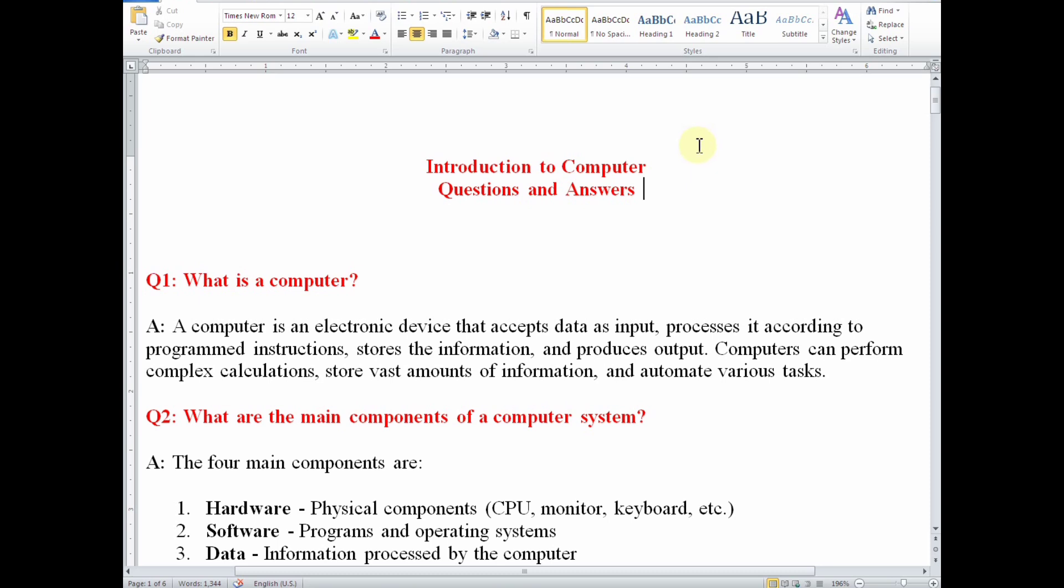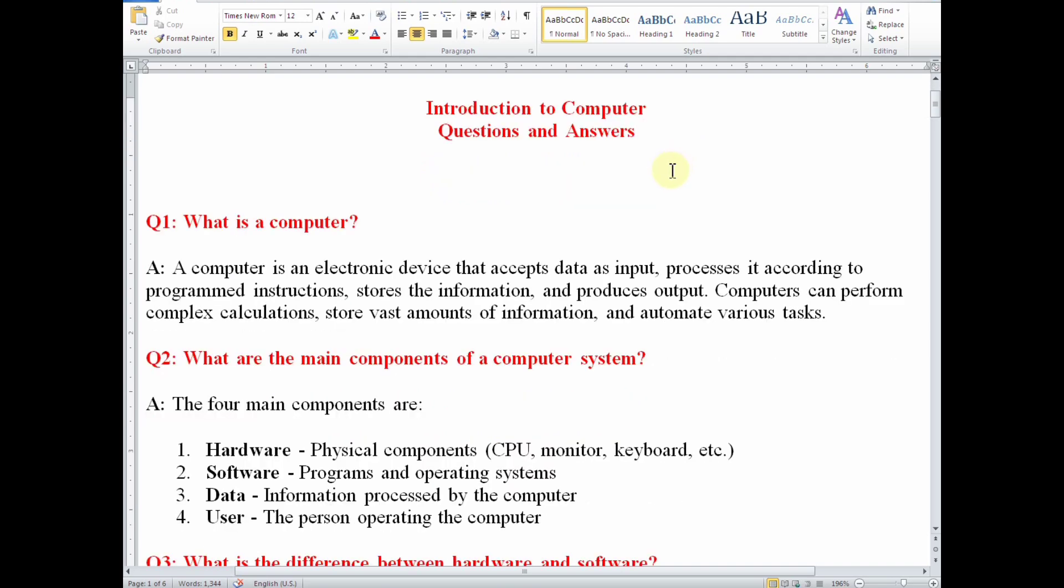What is a computer? A computer is an electronic device that accepts data as input, processes it according to program instructions, stores the information and produces output. Computers can perform complex calculations, store vast amount of information and automate various tasks. Question number two, what are the main components of a computer?